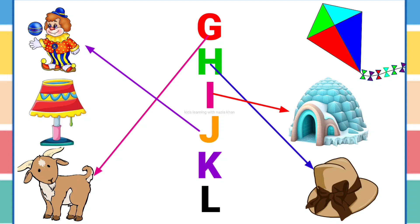J is for joker. J, J, joker. K is for kite. K, K, kite. L is for lamp. L, L, lamp.